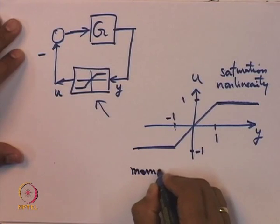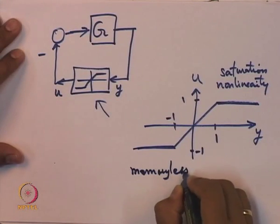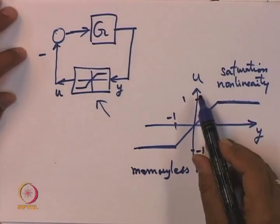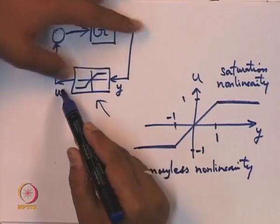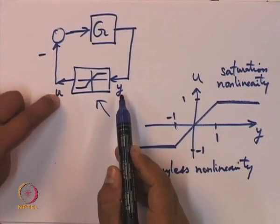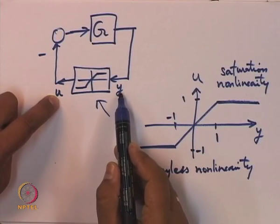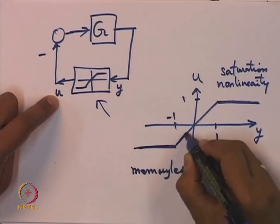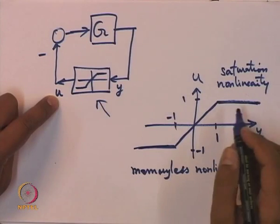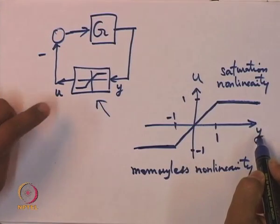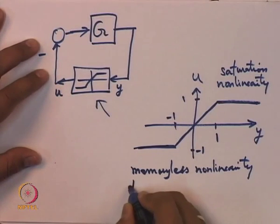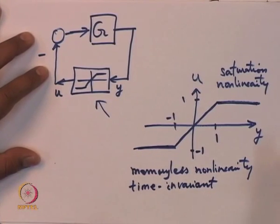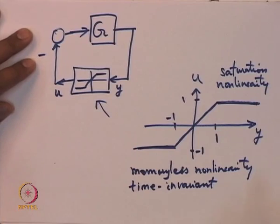This is an example of a memoryless nonlinearity. What is memoryless about it? The output u depends only on the current value of y. It does not depend on the rate of change of y or the second derivative of y. In other words, whether y is increasing or decreasing it takes its value. Further, this dependence of u on y does not depend on time explicitly. It is memoryless and time invariant.